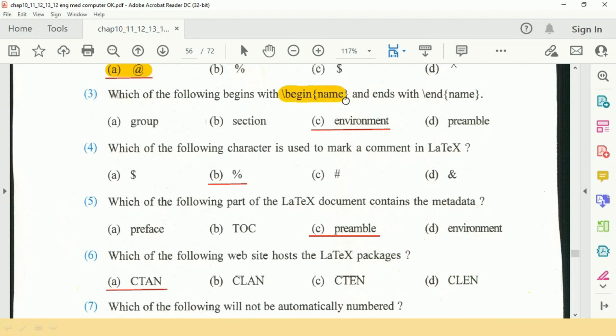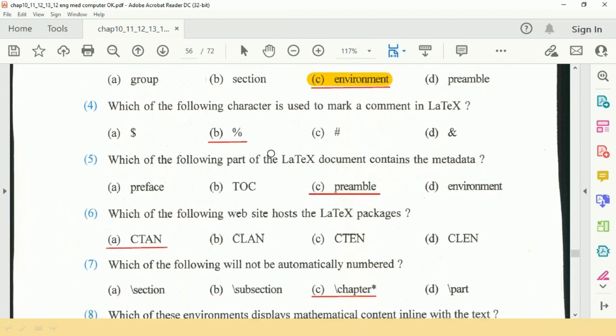ends with the end name? So answer is C, environment. Question number 4 is: Which of the following character is used to make a comment in LaTeX? So the modular symbol is used.